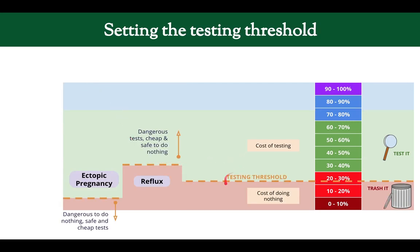Now let's look at the testing threshold. Here we weigh the cost of testing versus the cost of doing nothing. If we move this threshold up, we shrink the tested zone and grow the trash-it zone. This is when tests are dangerous and it's cheap or safe to do nothing. Take heartburn again — maybe we don't really think it's heartburn. What happens if we miss heartburn? Is it going to kill someone? No, they'll just have some more heartburn. We're willing to accept that risk because it's safe to do nothing, but the blood test might be expensive or the endoscopy might be dangerous. My suspicion was low, so I'm willing to drop it.